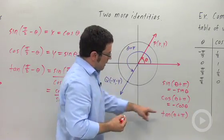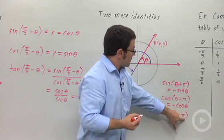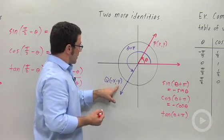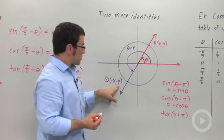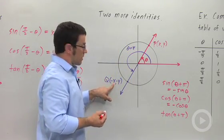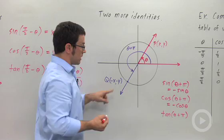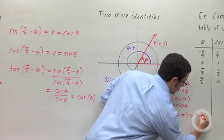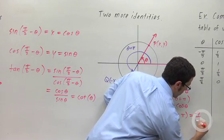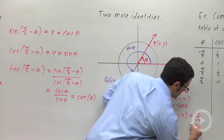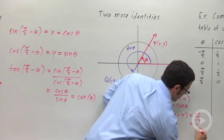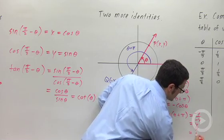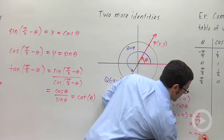The tangent of theta plus pi is going to be this y-coordinate divided by this x-coordinate: negative y over negative x, which is y over x, which is tangent theta.